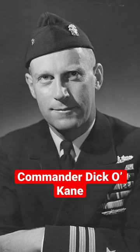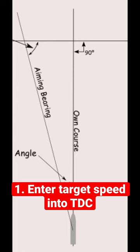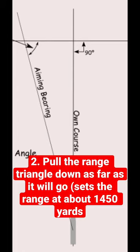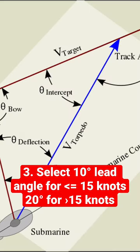Dicko cane attack rules. 1. Enter target speed into TDC. 2. Pull the range triangle down as far as it will go — sets the range at about 1450 yards. 3. Select 10 lead angle for 15 knots, 20 for 15 knots.